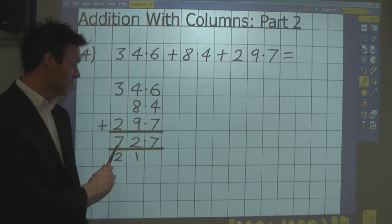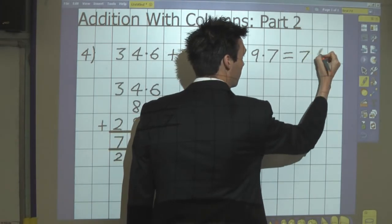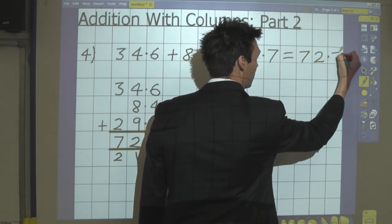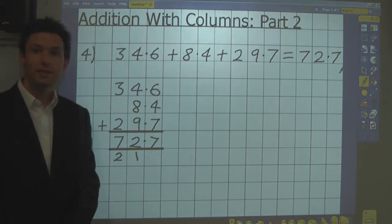And the answer to the calculation is 72.7. And that is how you add numbers in columns.